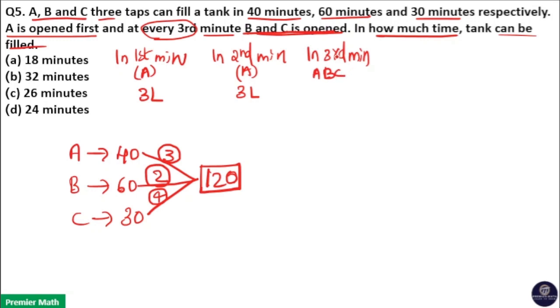So A, B, C will be working in the third minute and every third minute. That means at third minute, sixth minute, ninth minute, twelfth minute and so on, A, B, C will work together. So three plus two plus four liters is filled in the third minute.